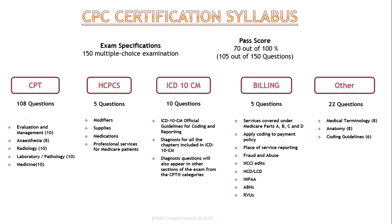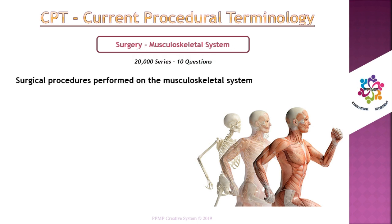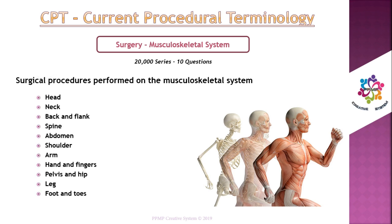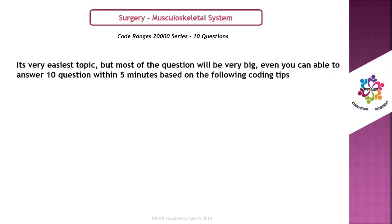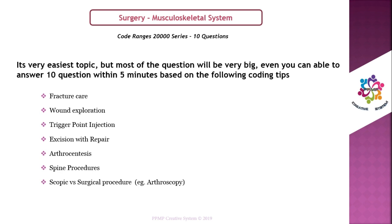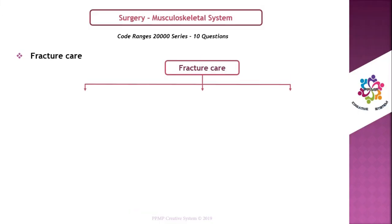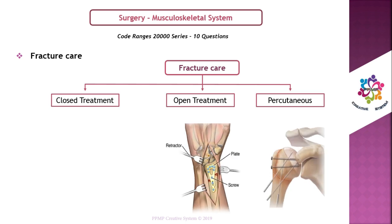In this CPC certification syllabus, today we are going to learn surgery — especially the musculoskeletal system. The code ranges are the 20,000 series, in which we may expect around 10 questions in the CPC exam. This is a very easy topic, but most questions will be very big. You can answer 10 questions within five minutes based on these coding tips: fracture care, wound exploration, trigger point injection, excision with repair, arthrocentesis, spine procedures, scopic versus surgical procedure, and cast application.